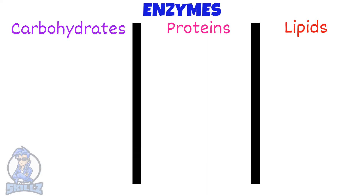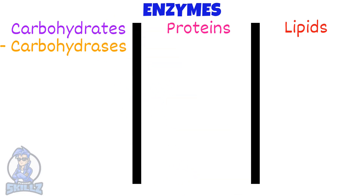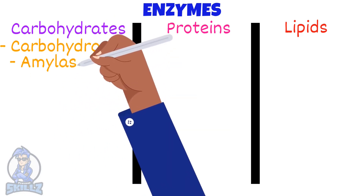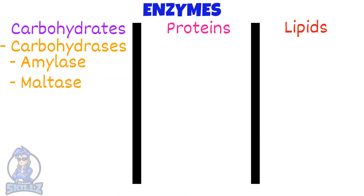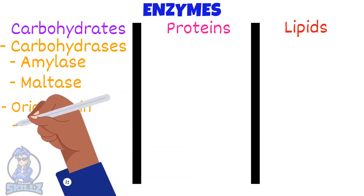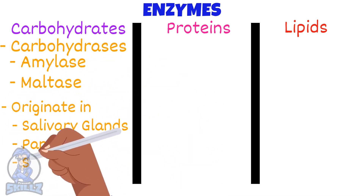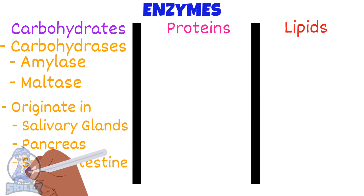Carbohydrates are broken down by the enzymes carbohydrases. Some examples of carbohydrases include amylase and maltase. These enzymes originate from the salivary glands, pancreas, and the wall of the small intestine.